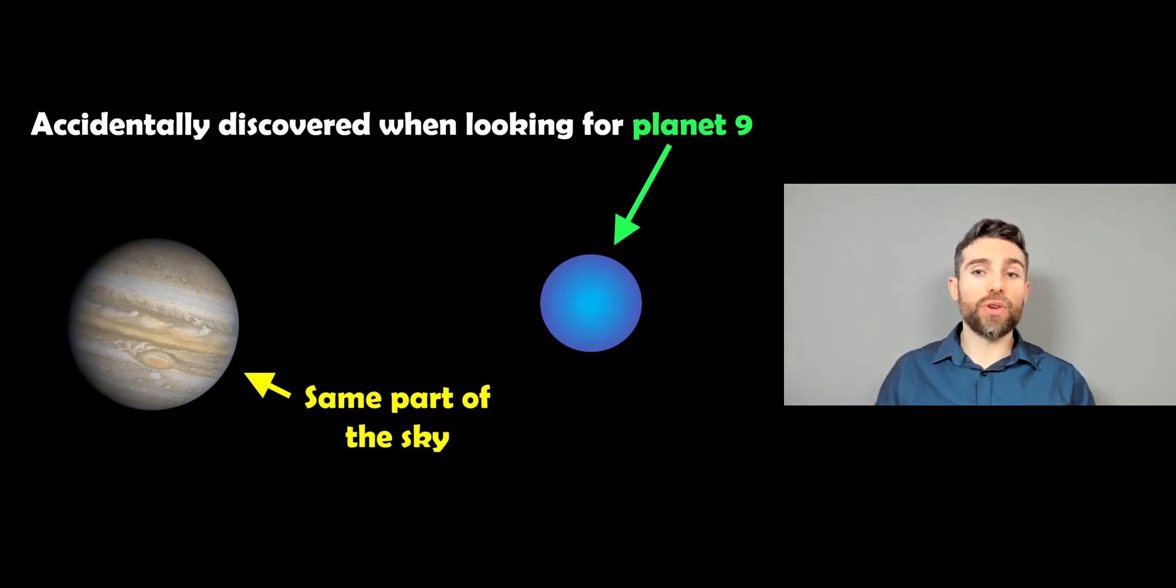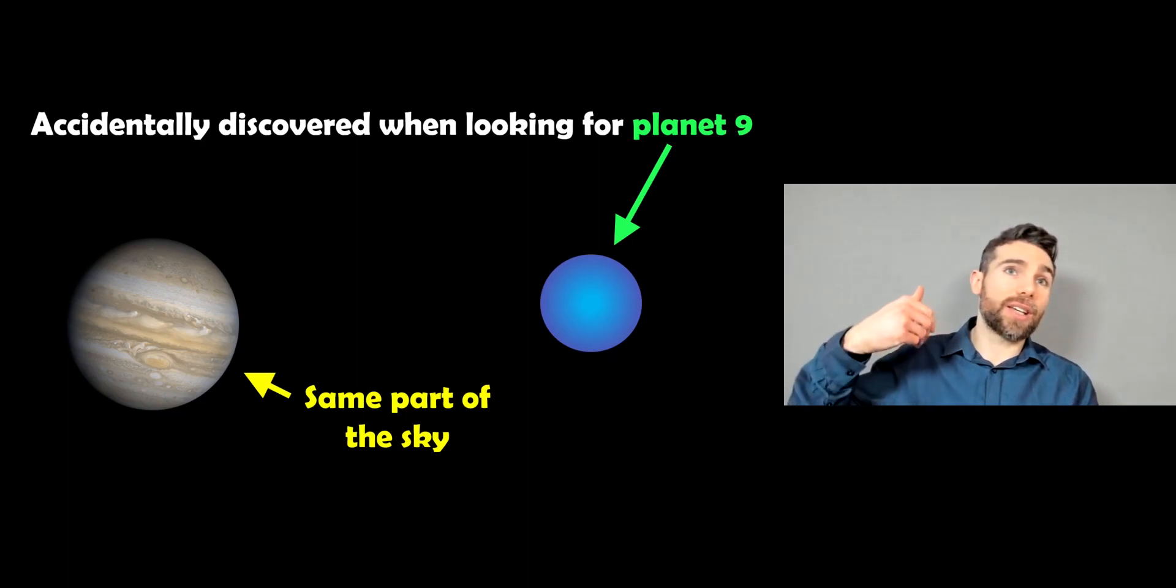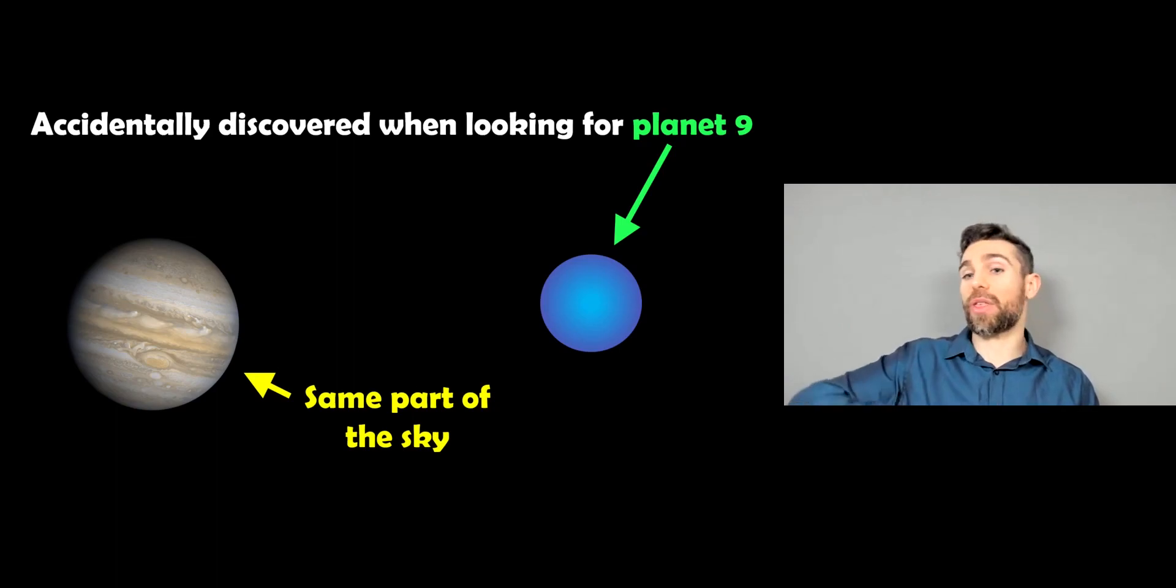Now these 12 new moons, they were accidentally discovered when trying to look for planet 9. So planet 9 is an additional planet we think might be at the outer part of our solar system. It could have been thrown out during the formation process. So we think we know where it might be. So people have been looking to try and find it. And it just so happened that when they were doing that, Jupiter was in the same part of the sky just by pure accident. And they were able to detect these other 12 moons purely because they were looking for this planet 9 which is much further out and much fainter.